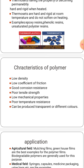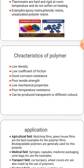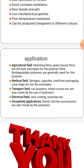Next one is characteristics of polymer. There are many characterizations of polymers. It has low density, low coefficient of friction, good corrosion resistance, poor tensile strength, low mechanical properties, poor temperature resistance, and it can be produced transparent or in different colors.